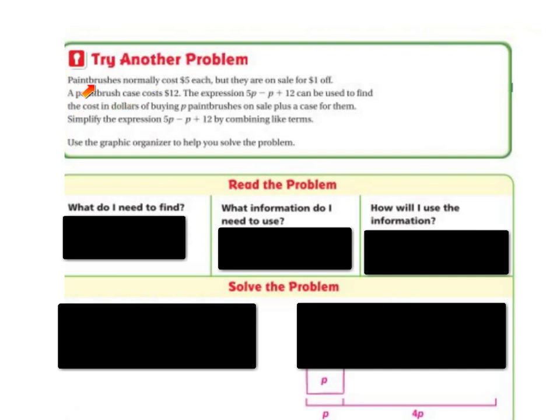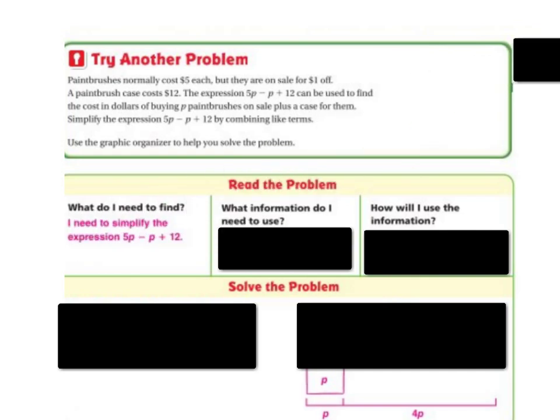Let's try another problem. Paintbrushes normally cost $5 each, but they are on sale for $1 off. A paintbrush case costs $12. The expression 5P minus P plus 12 can be used to find the cost in dollars of buying P paintbrushes on sale plus the case for them. Simplify the expression by combining the like terms. So what do I need to find out? Well, I need to find out an expression to simplify 5P minus P plus 12.